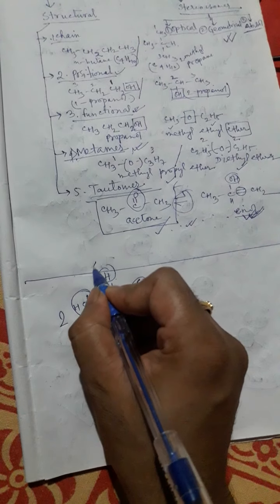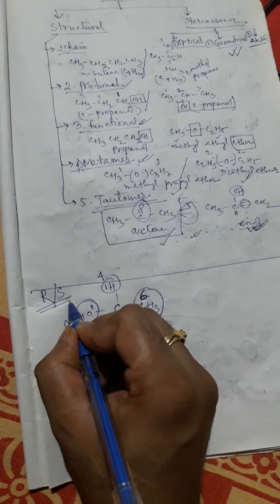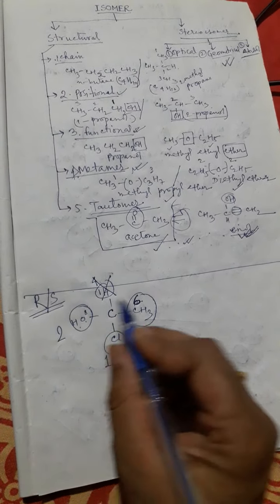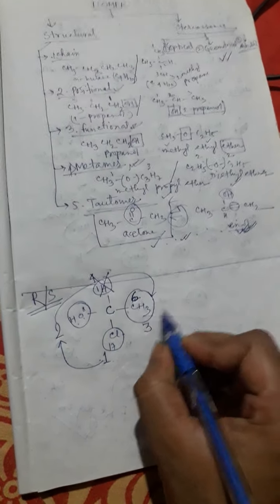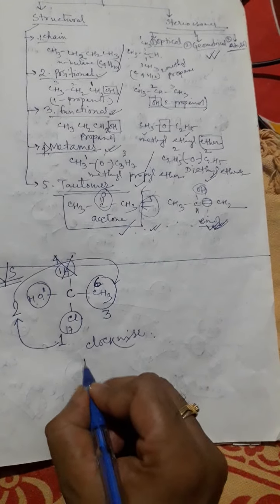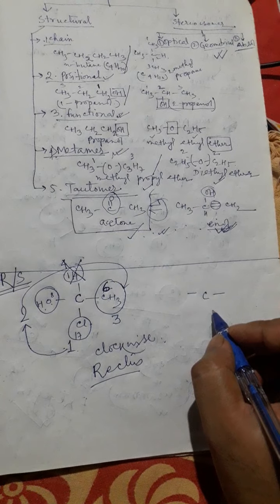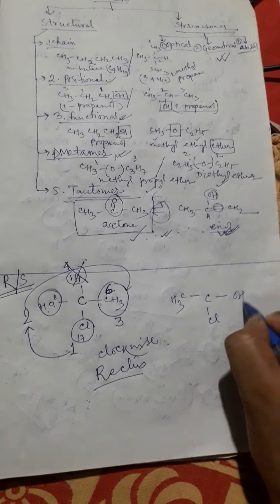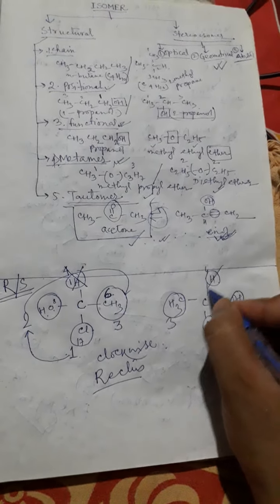For naming rectus and sinister in absolute isomerism: first, the lowest priority group is put to the back. Then you observe whether the rotation of the remaining priority groups — one, then two, then three — is clockwise or anti-clockwise. In this example it comes as clockwise, so it is called rectus. Now consider another example: here CH3, Cl, OH, and H are arranged so that going from priority one to two to three gives anti-clockwise rotation.